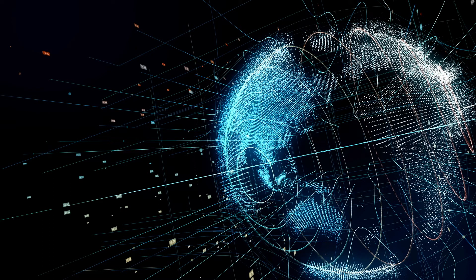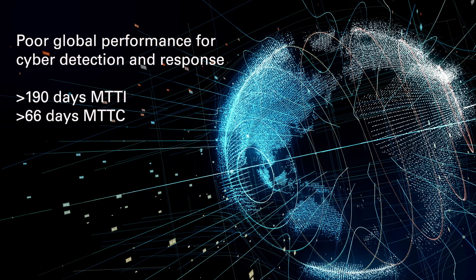The big issue is really just poor historical global performance when it comes to cyber detection response. If you look at the latest Poneman Institute publications, they're showing the mean time to identify security incidents as over 190 days, with another 66 days beyond that as the mean time to contain incidents — which, as global averages, are just terrible. So clearly, we can do a better job at detection and response.